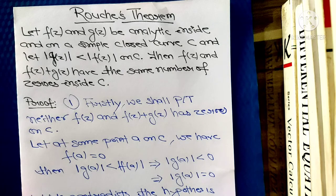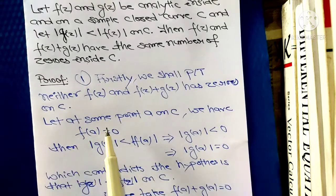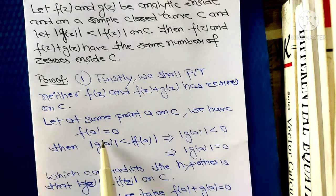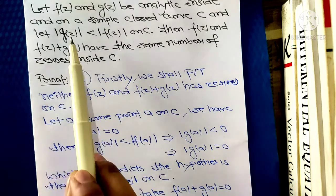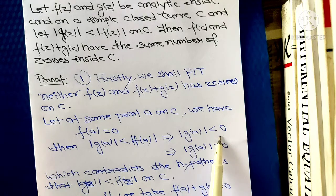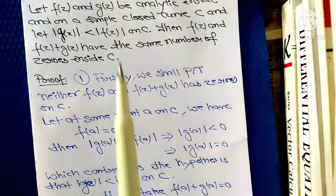This is the statement of Rouché's theorem and I am going to prove this theorem in two parts. Firstly, we shall prove that neither f nor f plus g has zeros on C. For this, suppose there is a point A on curve C for which f(A) equals 0. Then from the hypothesis, |g(z)| < |f(z)|, so |g(A)| < |f(A)|, which implies |g(A)| < 0.